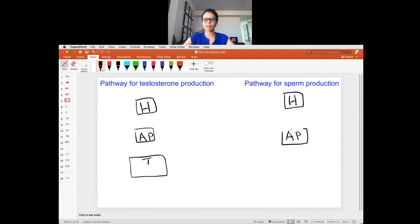It might really help you to draw along with me so that don't just watch the video but draw, follow along, so that's going to help you understand a lot better. So the hypothalamus pituitary testes pathway for testosterone is in the cells called Leydig. And the hypothalamus pituitary testes pathway for sperm production is in the Sertoli cells.